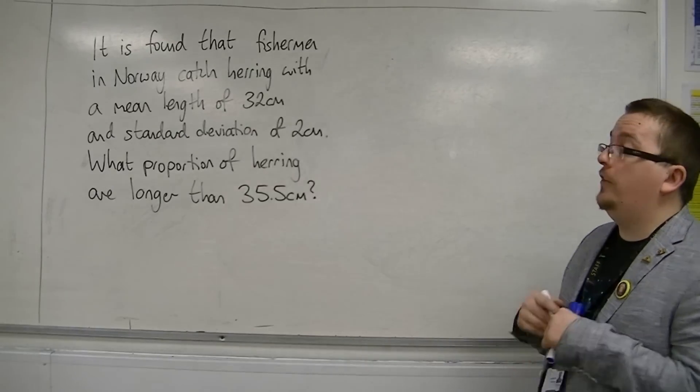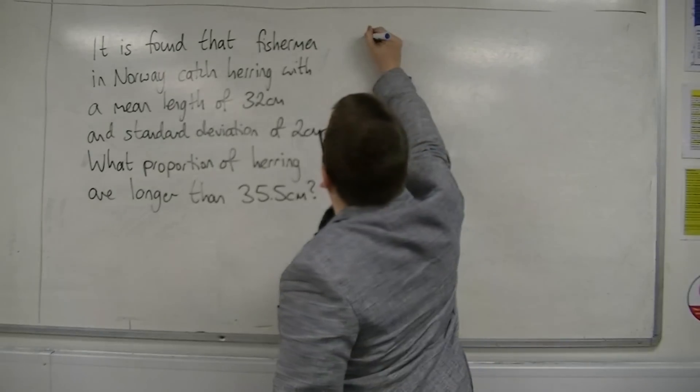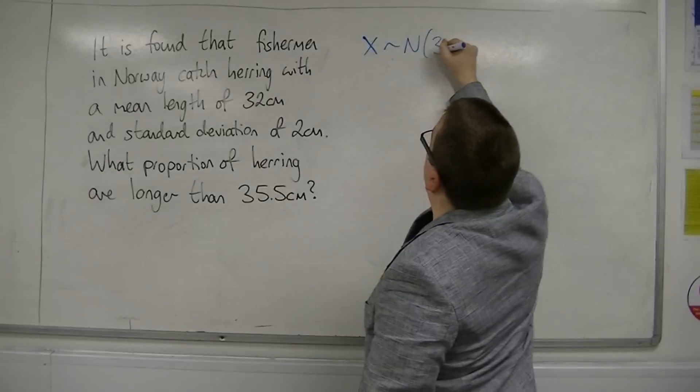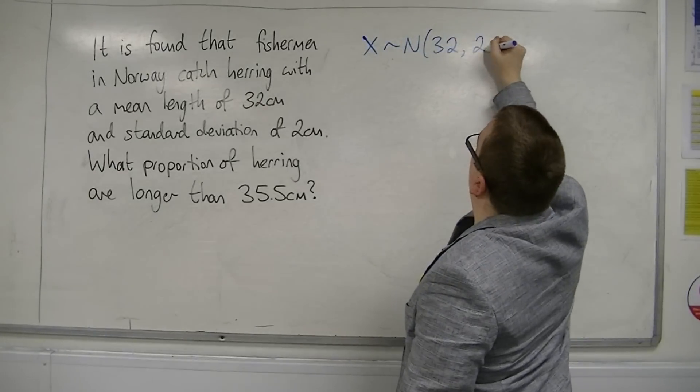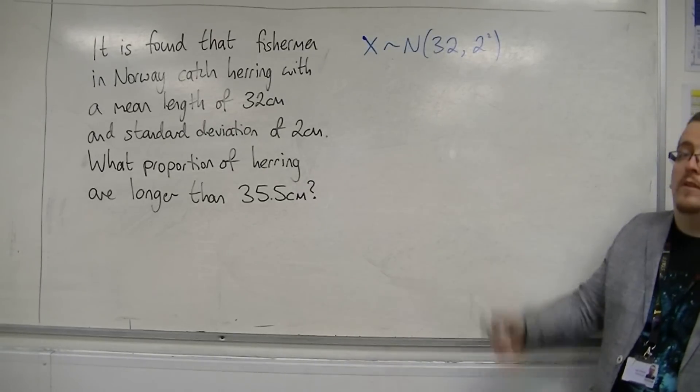First of all we want to define the normal distribution that we're considering. So x is normally distributed with a mean of 32 and a variance of 2 squared. Remember it's mean and then variance.